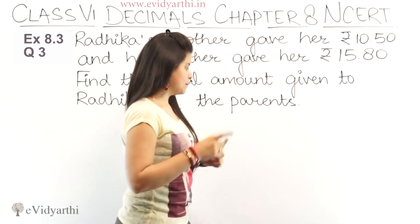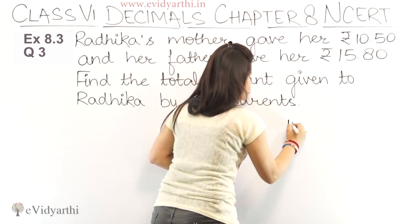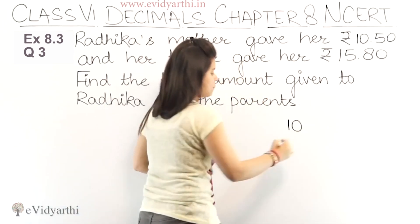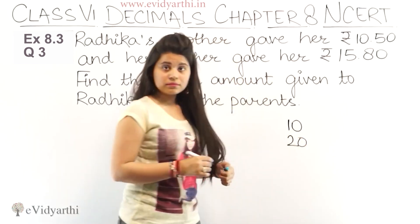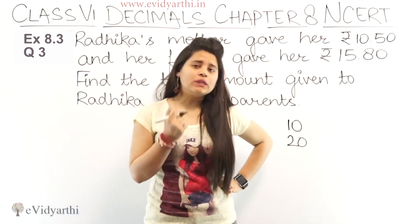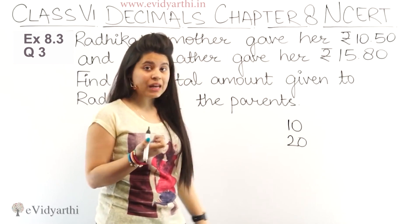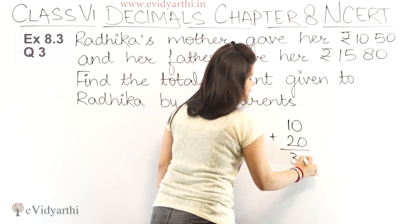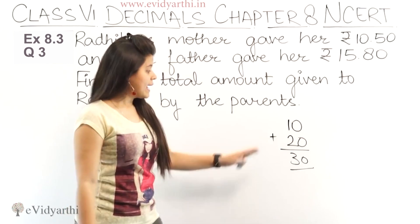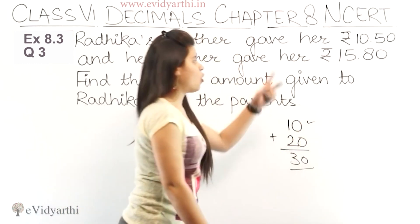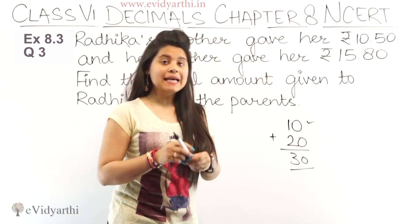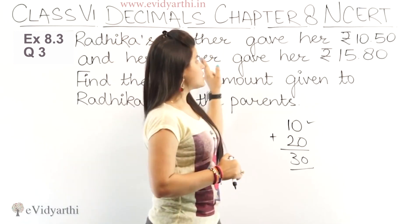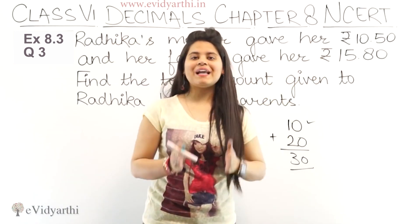Let's take an example. Your mother gave you 10 rupees and your father gave you 20 rupees. How do you calculate the total amount of rupees? You will add it. It is a simple number, and in the decimal count we have done the same thing — what do you do with what mother gave and what father gave?